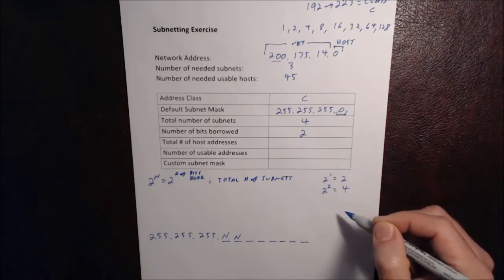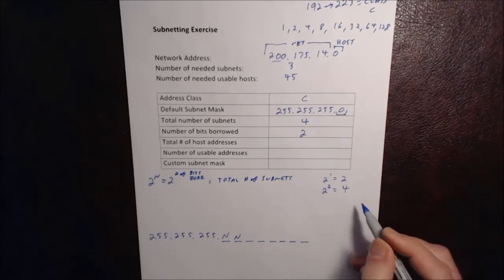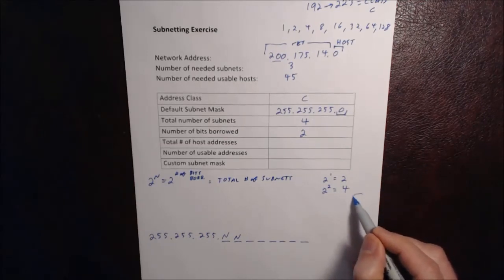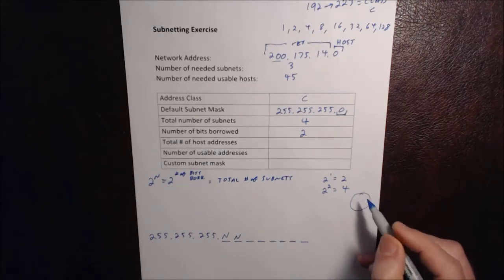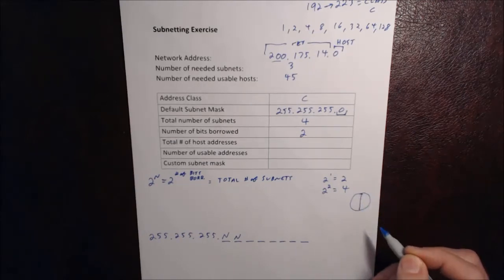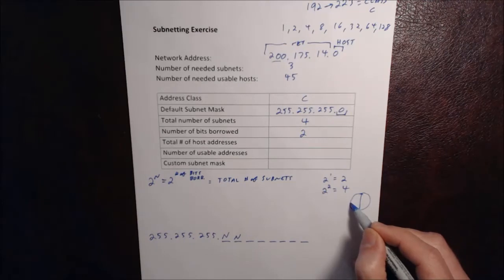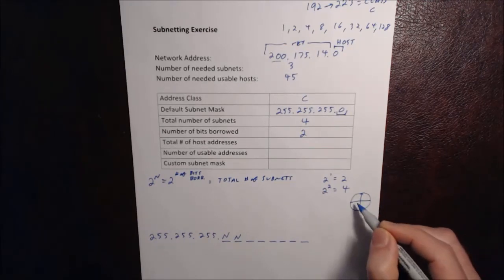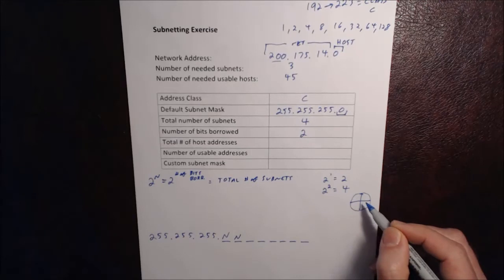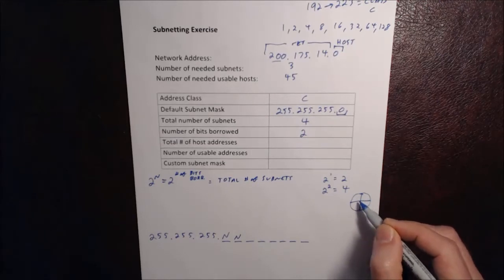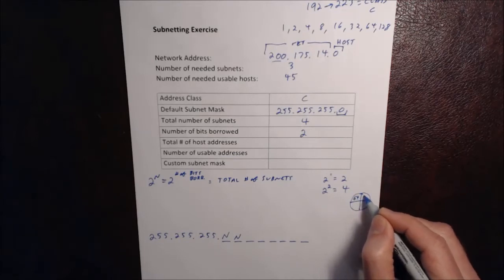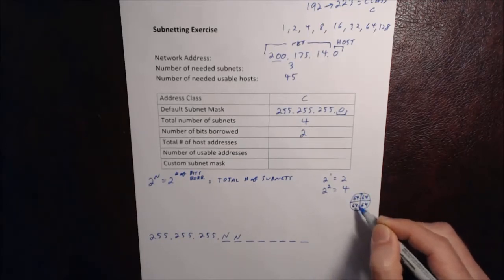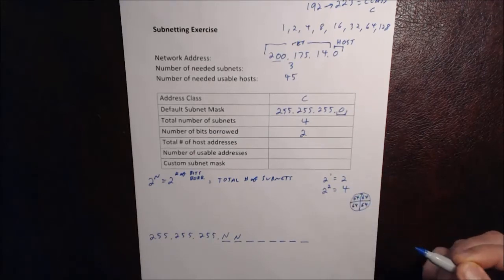And if you remember from the pizza example I gave earlier, if we look at it like this, if we look at our circle, and if we divide the network in half, we borrow 1 network bit, we divide it in half again, we borrow a 2nd network bit, we start with 256, and we've divided that in half, 128 and 128, and then we end up with 64, 64, 64, and 64. So that's a visual representation of what we're doing here mathematically.